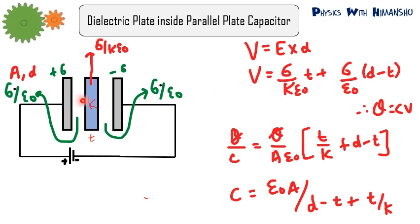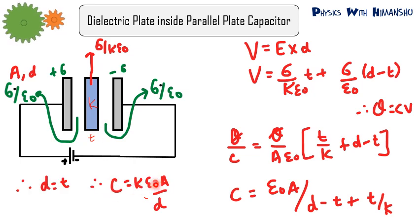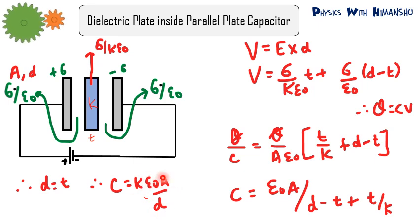Now suppose the complete space between the plates is filled with dielectric, meaning t = d. Substituting t = d into the formula, d − t = 0, and the capacitance becomes C = k·ε₀A/d. So if a capacitor had capacitance ε₀A/d and you fill it completely with a dielectric of constant k, the new capacitance is k times the original. For example, a 2 F capacitor filled with dielectric constant 10 becomes 20 F.